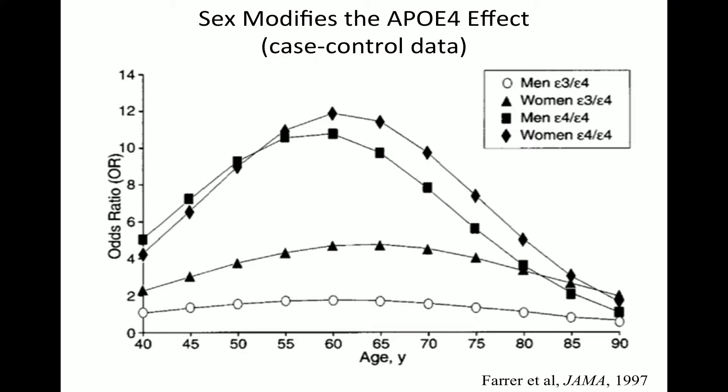Men carrying one copy of APOE4 compared to men carrying two copies of APOE3 don't bump their risk up at all. But if you're a woman carrying one copy of the E4 allele, your risk jumps up about fourfold. If you carry two copies, whether you're a man or a woman, your risk jumps about eight to tenfold. Even there, women appear to fare slightly worse with an APOE4 allele.